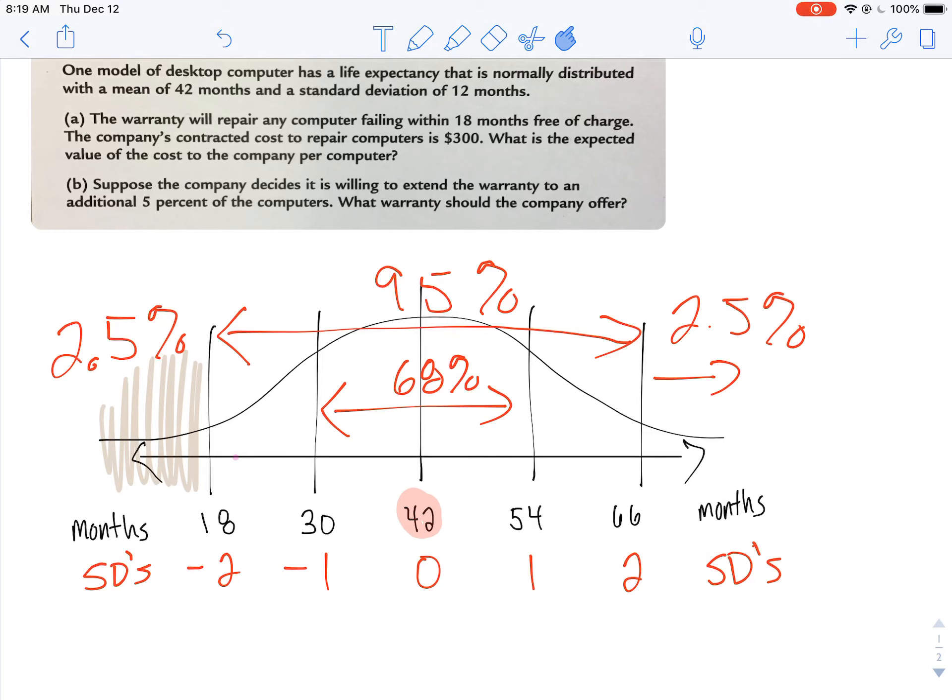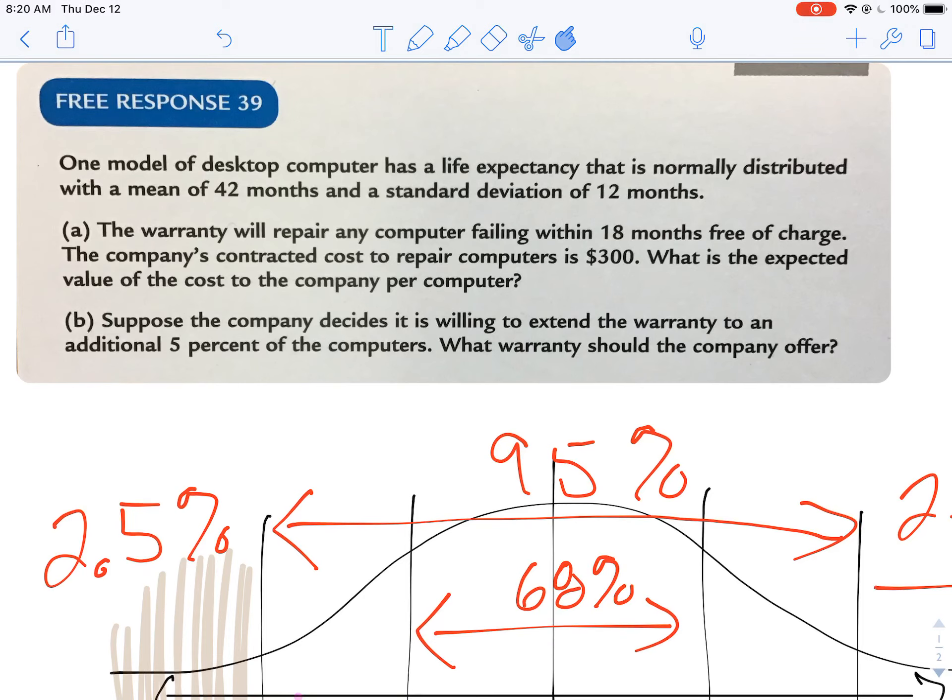Now, the first part is asking us if a warranty will repair any failing computer within 18 months free of charge. The company's contracted cost to repair computers is $300, which means that anytime a computer breaks, they have to pay $300 to fix it. What is the expected value of the cost to the company per computer?